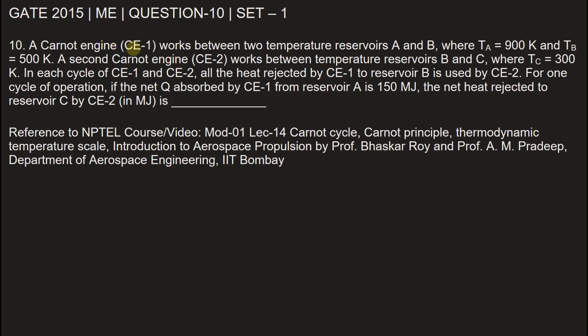A Carnot engine CE1 works between two temperature reservoirs A and B where TA is 900 Kelvin and TB is 500 Kelvin.